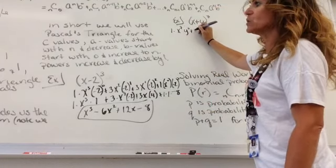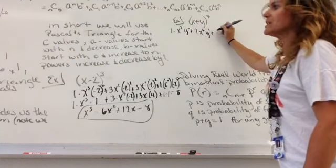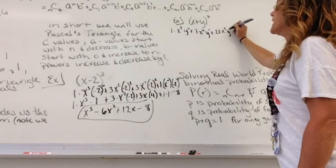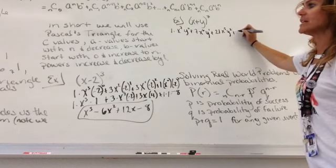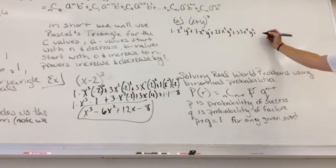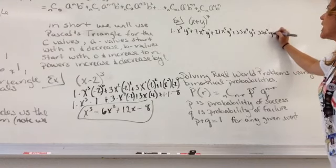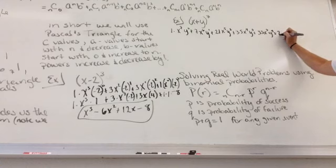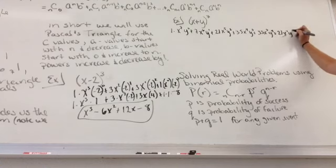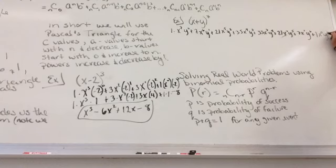This is one times x to the seventh, because a starts with the highest power, y to the zero. Then we have plus. It goes to seven x to the sixth, y goes up by one, plus twenty-one x to the fifth, y squared. Then it goes to the next one, thirty-five, x is going down, y is going up, but the two powers add to seven, plus thirty-five, plus thirty-five again, x cubed, y to the fourth, plus twenty-one x, whoops, made my x a little too long, squared, y to the fifth, plus seven x to the first, y to the sixth, plus one x to the zero, y to the seventh.